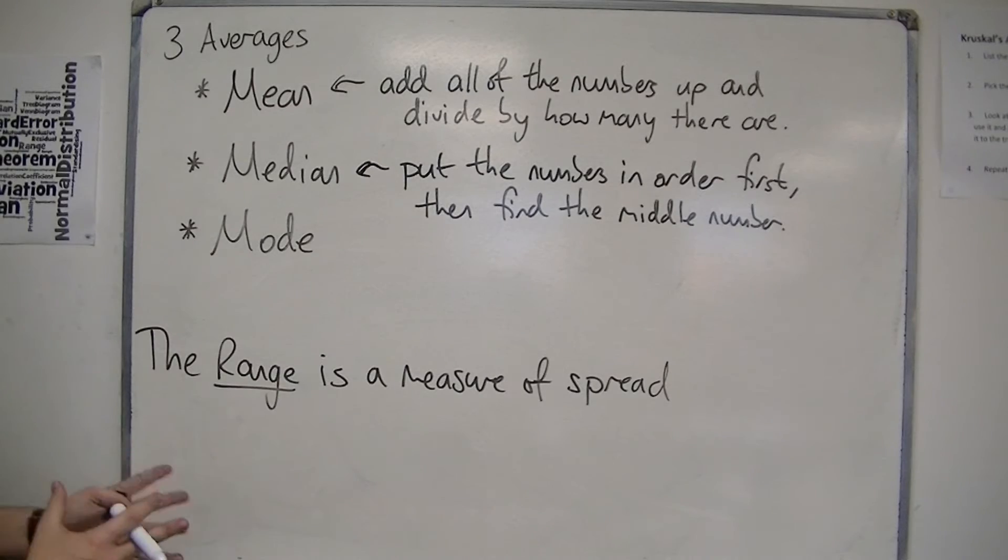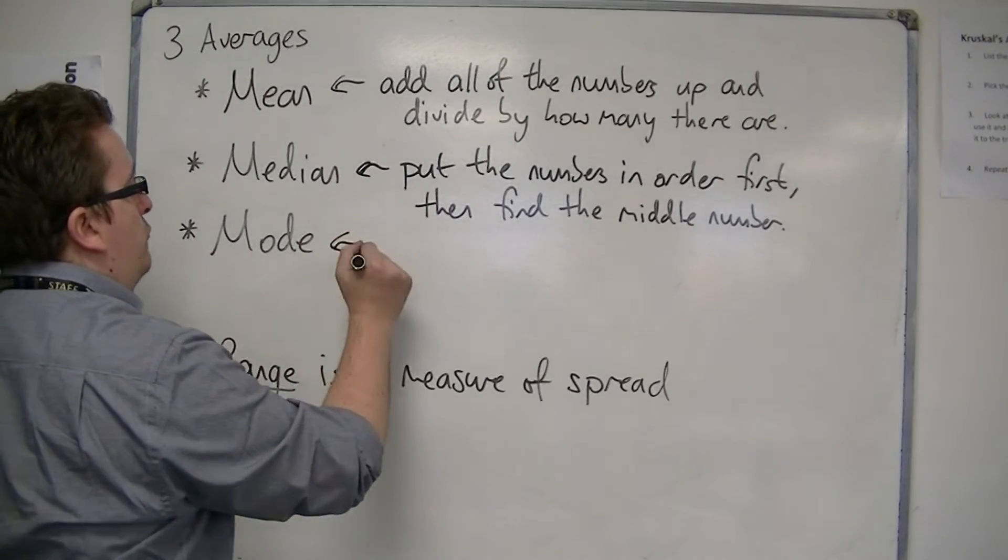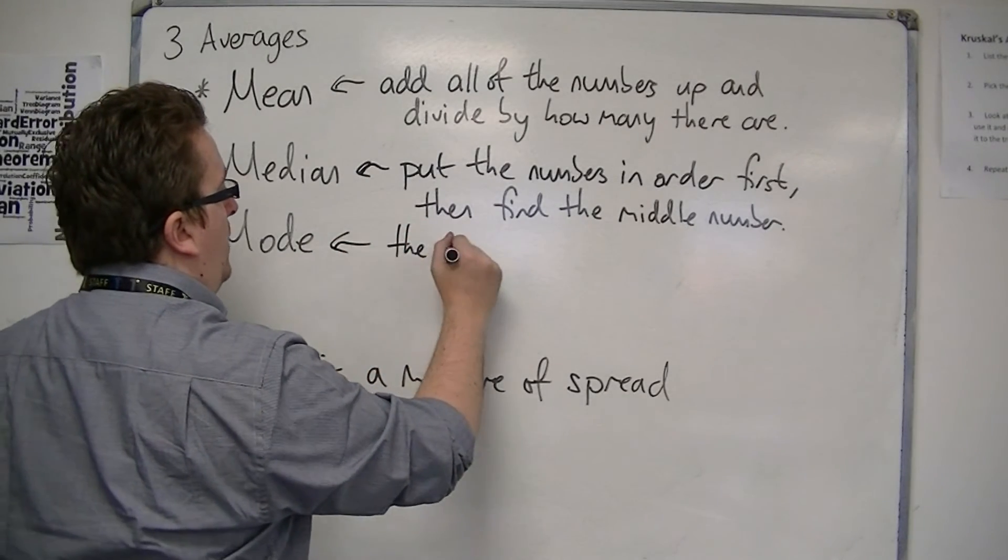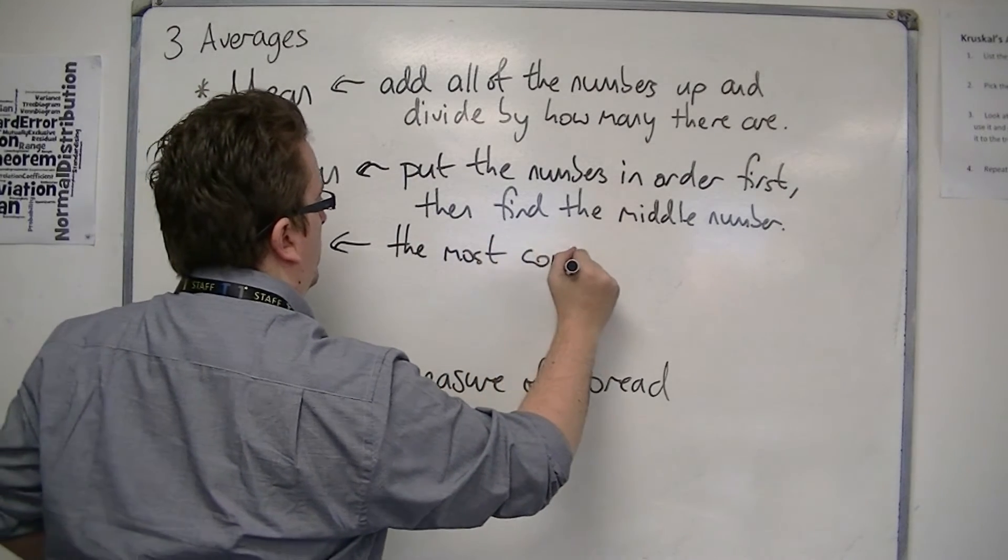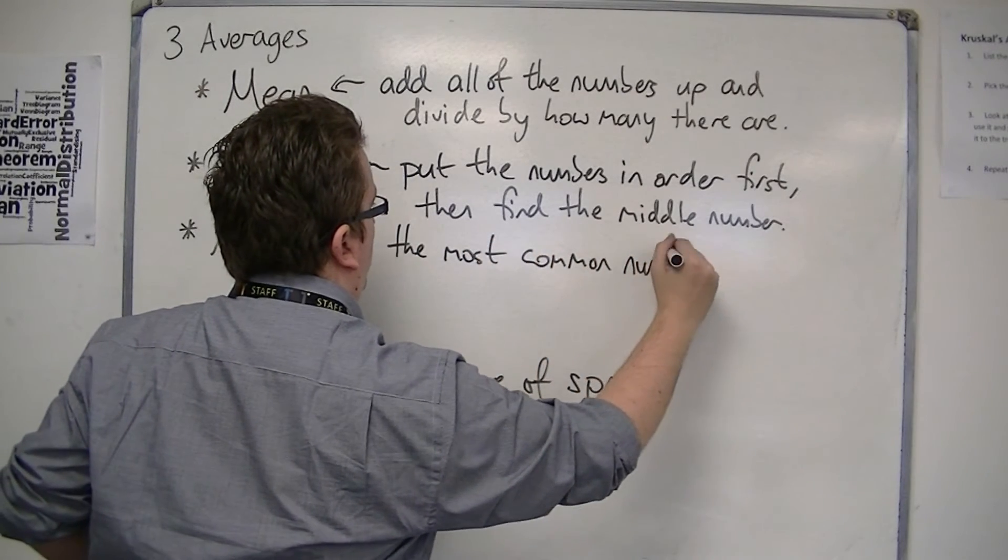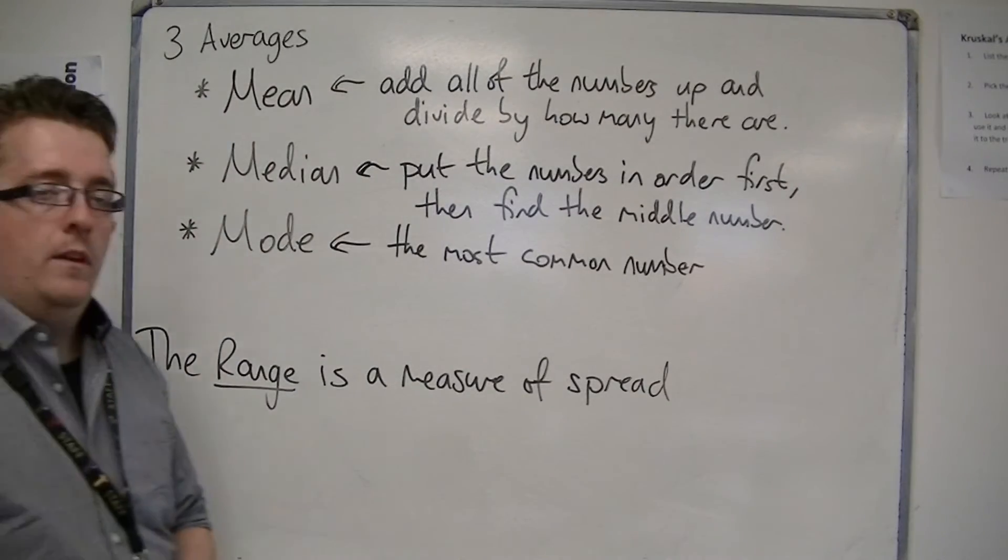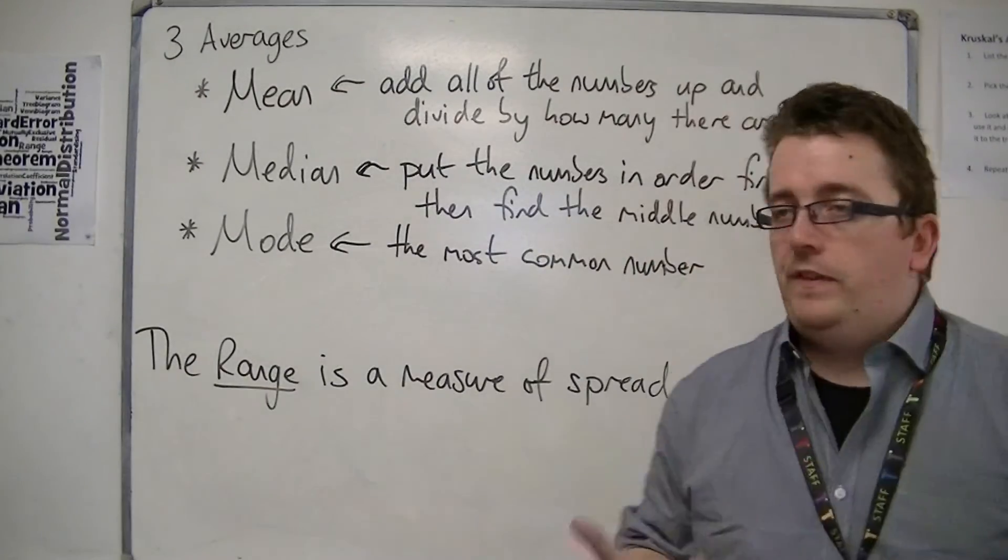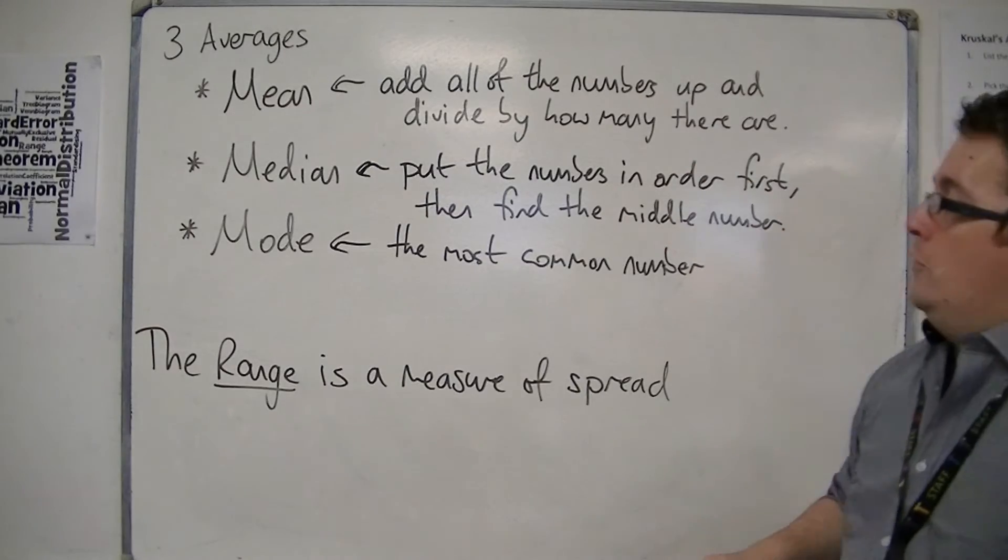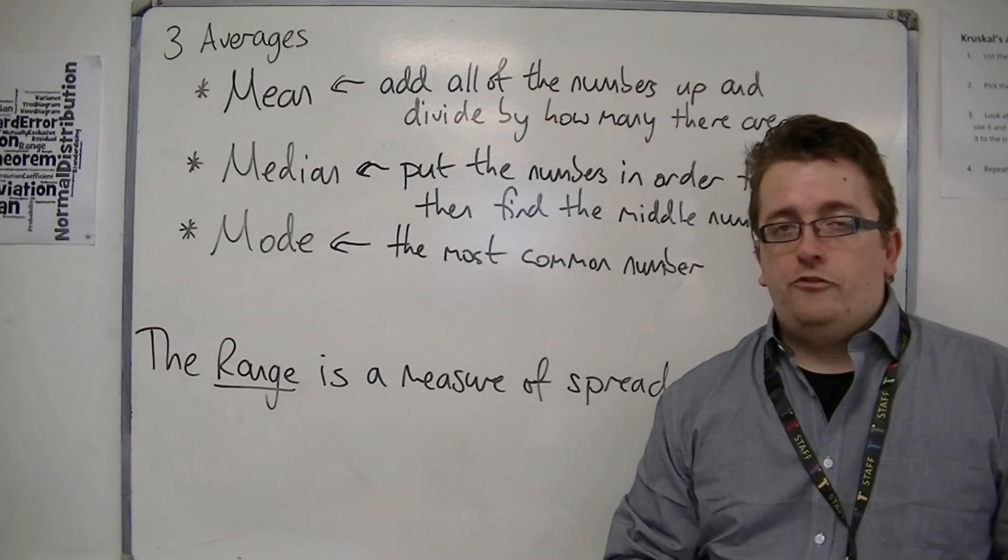And then the mode, the final average, is the most common number. The number that crops up the most times. So each of these—mean, median, and mode—can be calculated for a set of data.